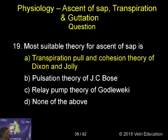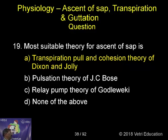Most suitable theory for ascent of sap is: (A) transpiration pull and cohesion theory of Dixer and Jolly, (B) pulsation theory of J.C. Bose, (C) relay pump theory of Godwitzki, (D) none of the above.